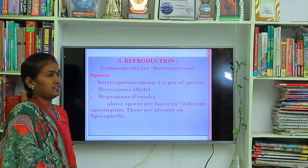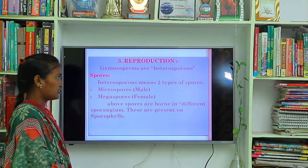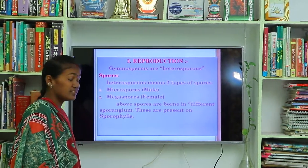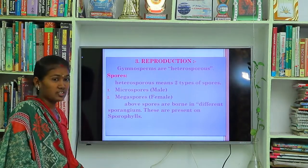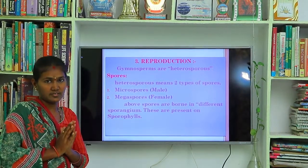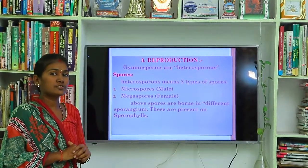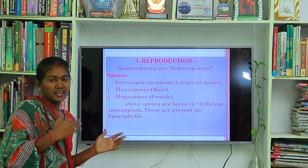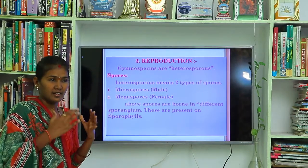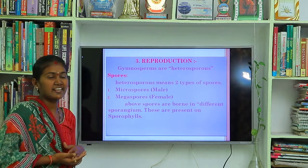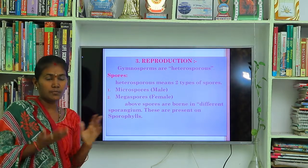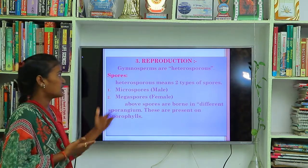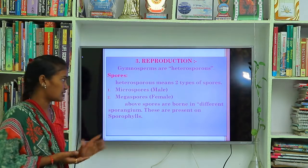Hello everyone. In this video I want to explain about the reproduction of gymnosperms. In gymnosperms reproduction, gymnosperms are heterosporous plants. Heterosporous means both male and female spores are in different size and different structure. Such spores are known as heterosporous. So gymnosperms are heterosporous.